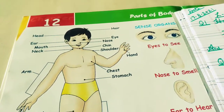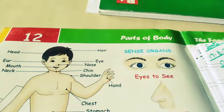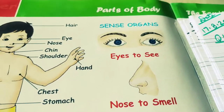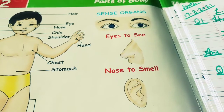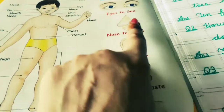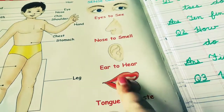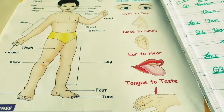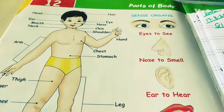Understood all of you? One more thing, please listen. How many sense organs do you have? I have only 5 sense organs: eyes, nose, ear, tongue, skin. These are our 5 sense organs.